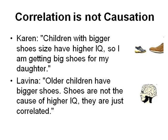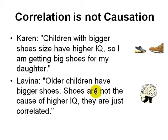The next fallacy is that correlation is not causation. Two things being related doesn't mean one is the cause of the other. For example: 'Children with bigger shoes have higher IQ, so I am buying big shoes for my daughter.' Of course bigger children have bigger shoes, but the shoes are not the cause of higher IQ. They are just correlated — the IQ doesn't come from the shoes.